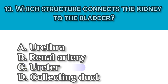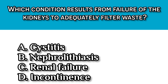Question number fourteen: Which condition results in failure of the kidneys to adequately filter waste? Our answer here should be C, renal failure, because in renal failure the kidneys lose their filtering ability, leading to waste build-up in the body.